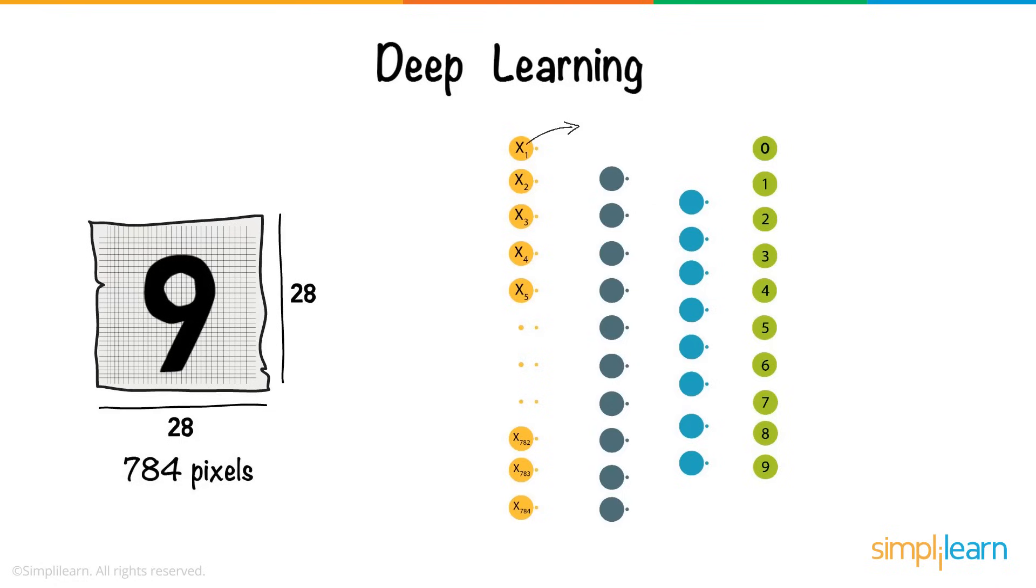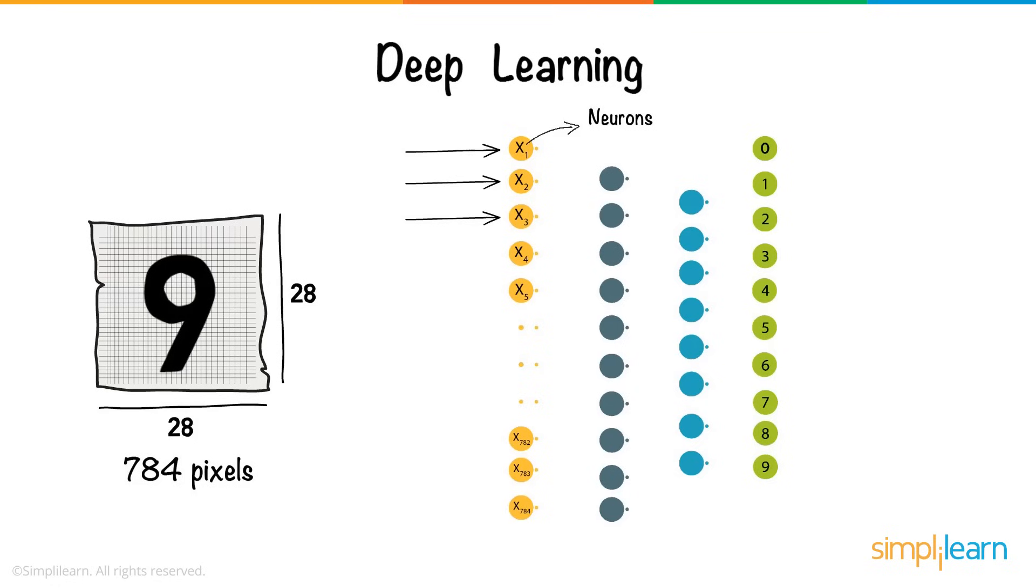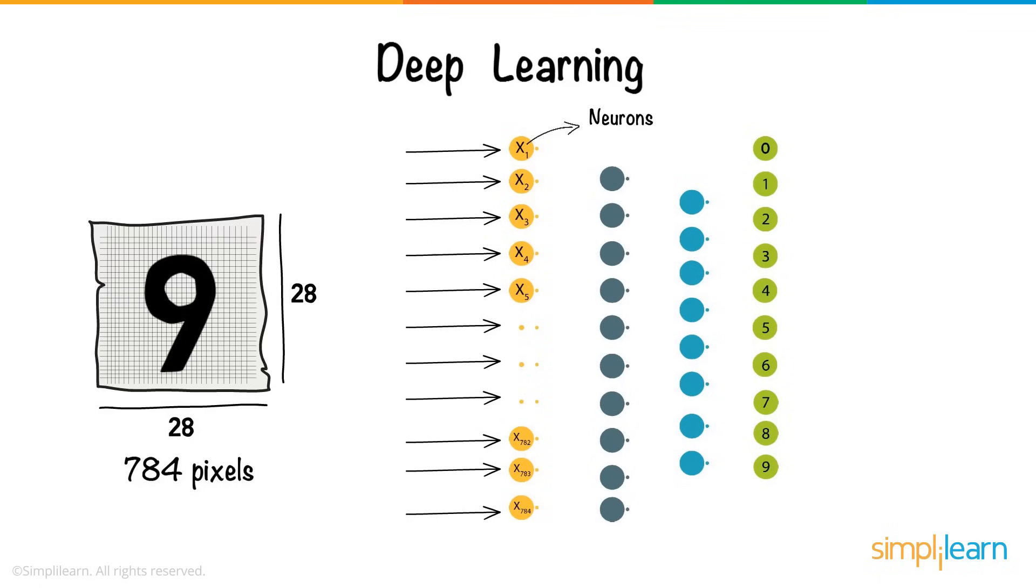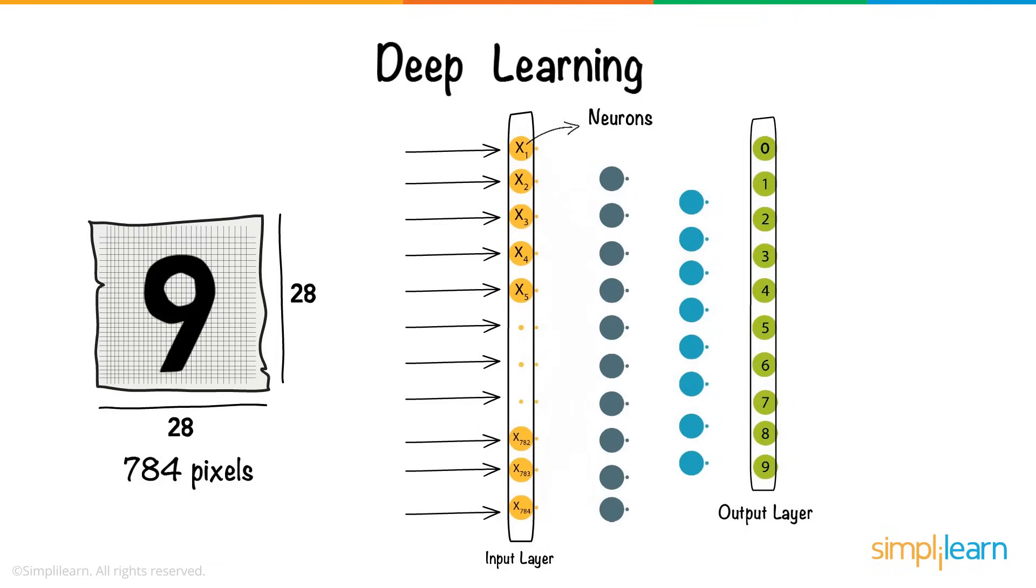Neurons, the core entity of a neural network, is where the information processing takes place. Each of the 784 pixels is fed to a neuron in the first layer of our neural network. This forms the input layer. On the other end, we have the output layer with each neuron representing a digit with the hidden layers existing between them.